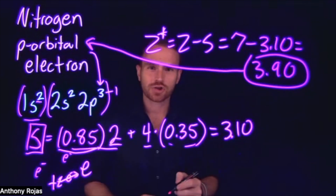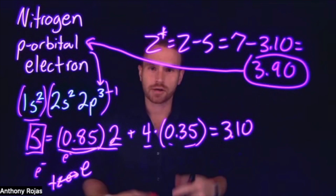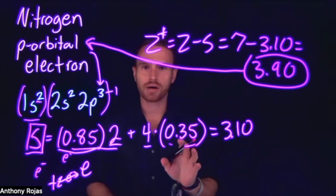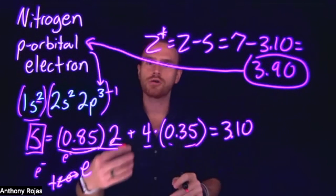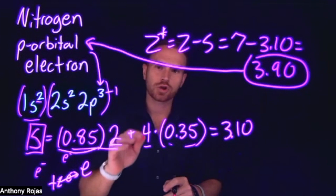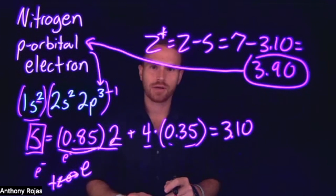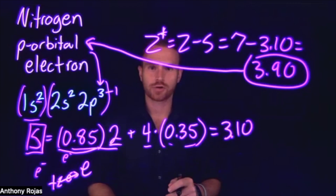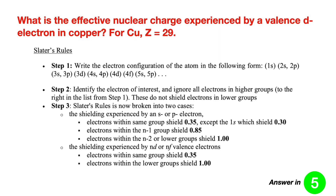Now let's try another example. I'm going to show it on the screen, and I'd like you to pause the video — I'll also provide you with Slater's rules. Try to work this out independently for a copper atom looking at a d-orbital electron, then resume the video once you've given it a shot and I will walk you through how to answer that question.